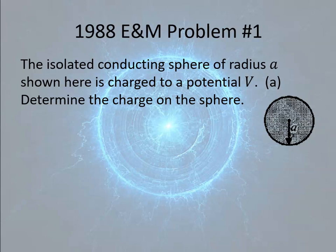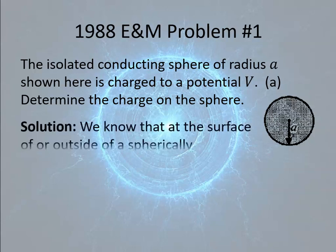In this video, we're going to go over problem number one of the 1988 AP Physics C Electricity and Magnetism AP exam. It starts off, you have an isolated conducting sphere of radius A charged to potential V, and part A is determine the charge on the sphere.